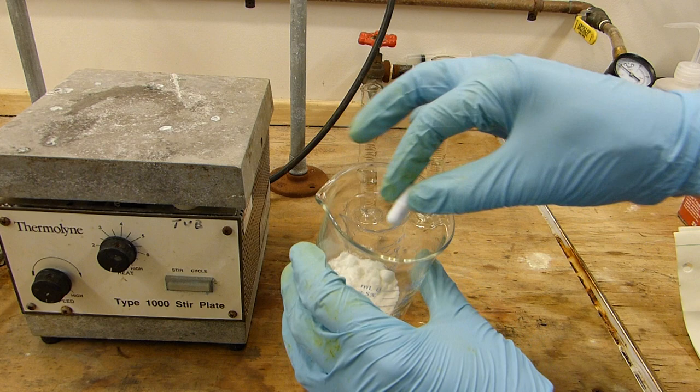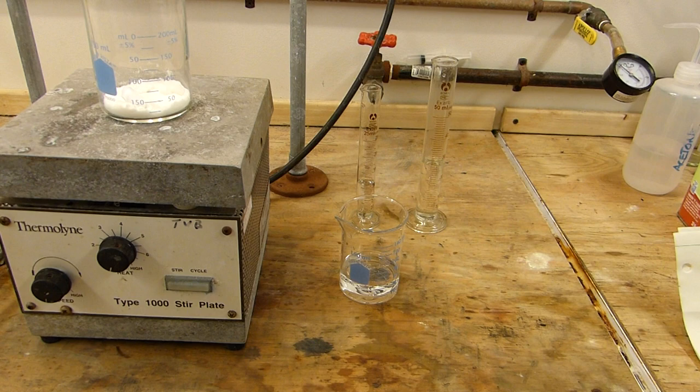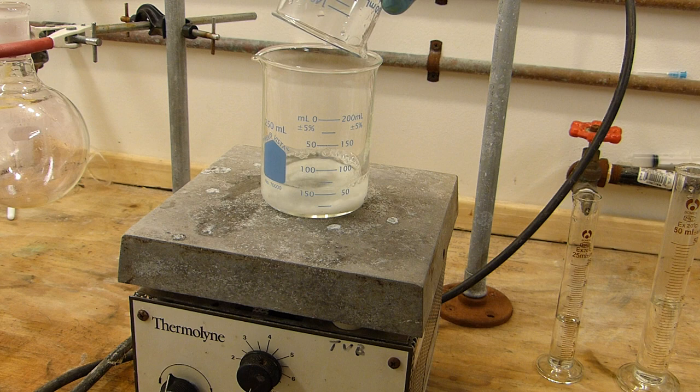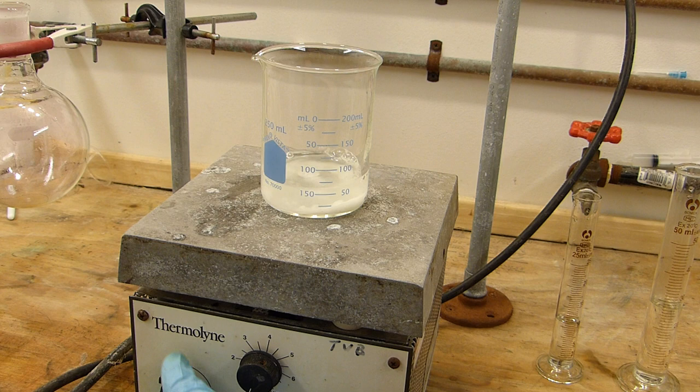So I'll start by placing the stir bar in the potassium iodide and we'll get this stirring on a plate with the water. Potassium iodide is very soluble in water so this won't take very long to dissolve.